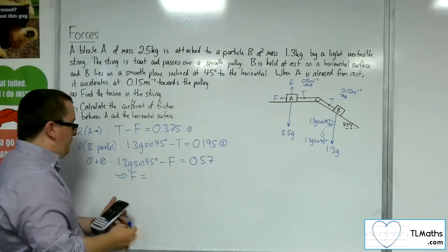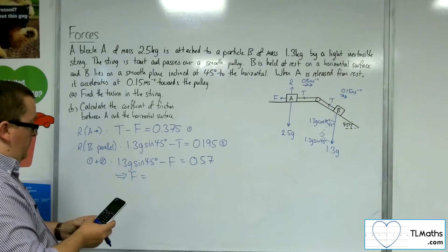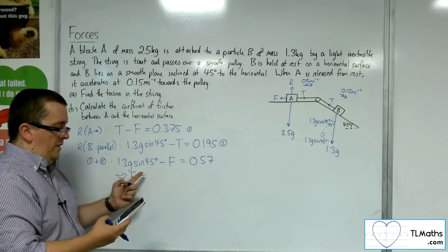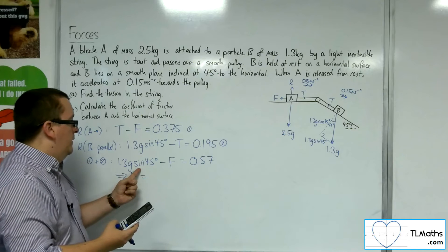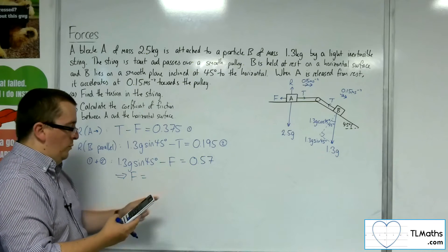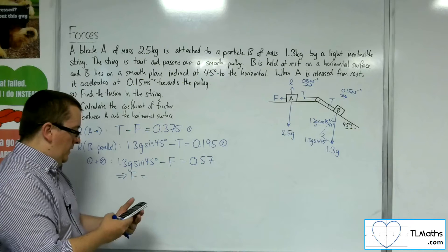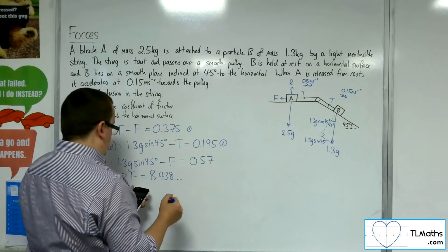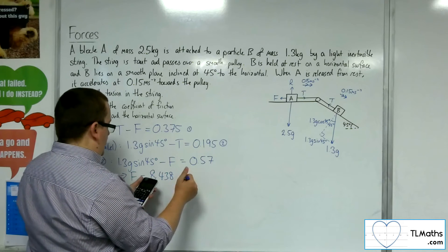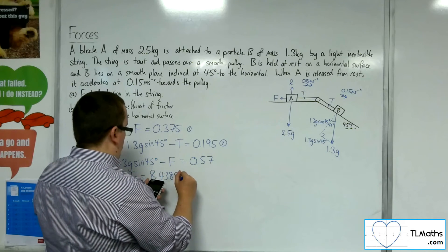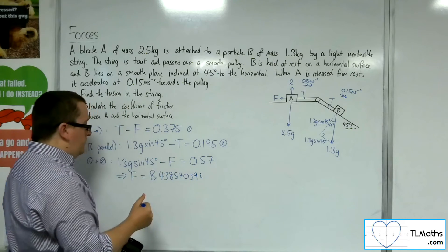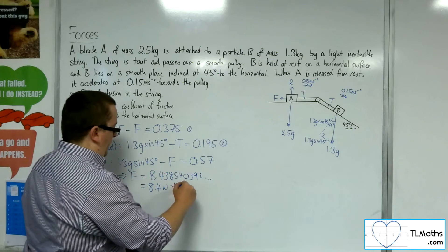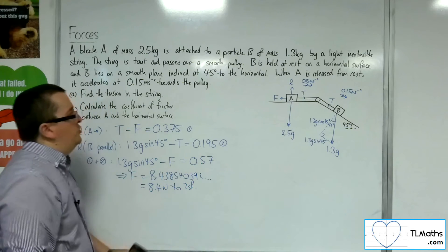So F, the frictional force, 1.3 times 9.8 times sine of 45, is 9.0085. And take away the 0.57. So the frictional force is 8.438, etc. So I'll write down the whole thing. 4385, 40392. And so that's 8.4 newtons to 2 sig fig. So that's my frictional force.